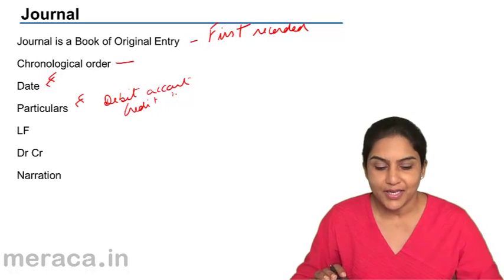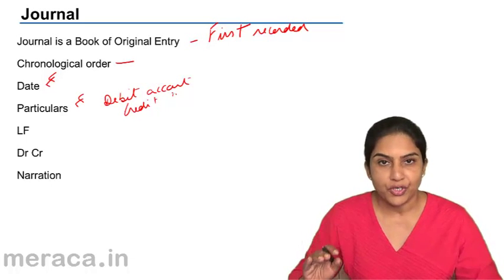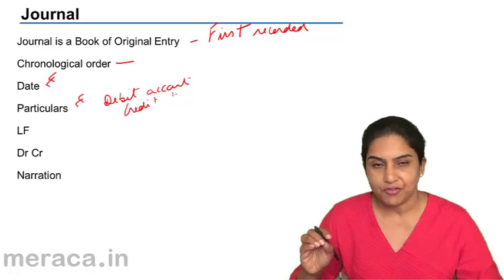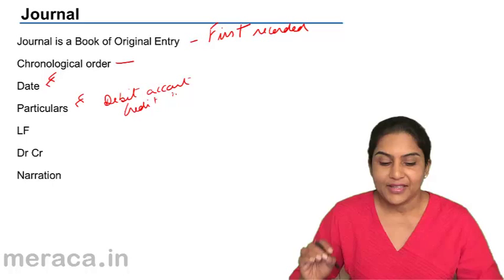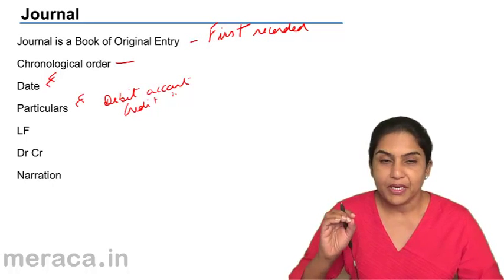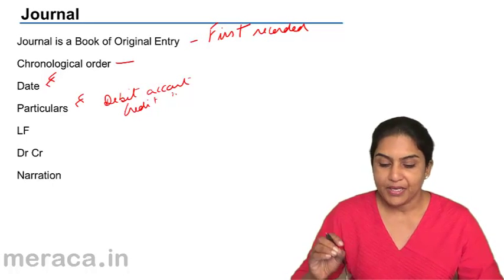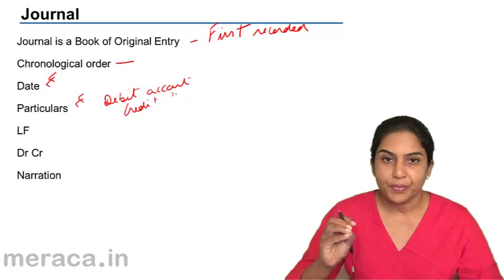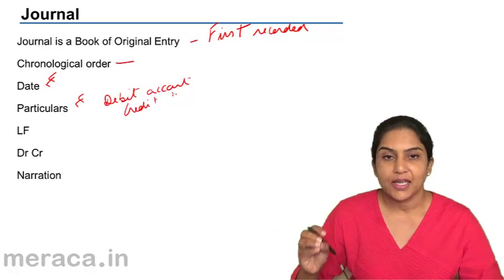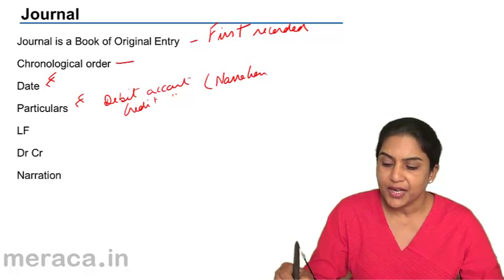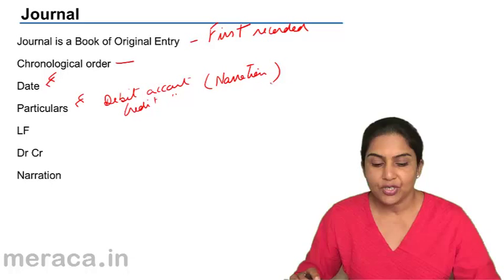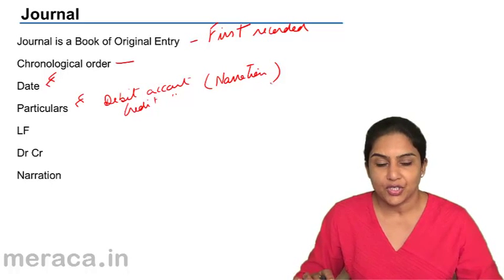The journal is a book of original entry where all business transactions are first recorded in a chronological manner. The date of the transaction, the particulars meaning the account to be debited, the account to be credited, and a small note called a narration explaining the transaction is entered in the particulars column.